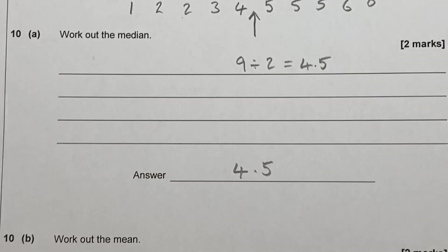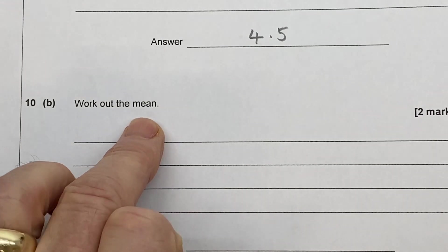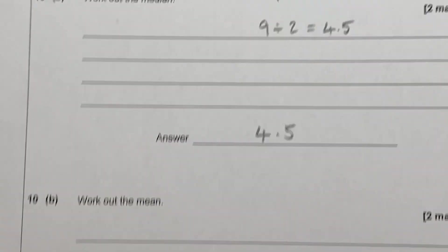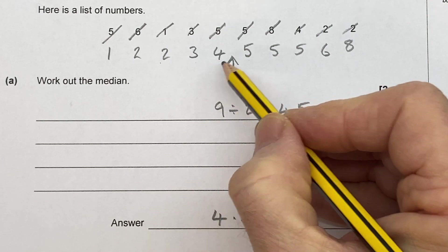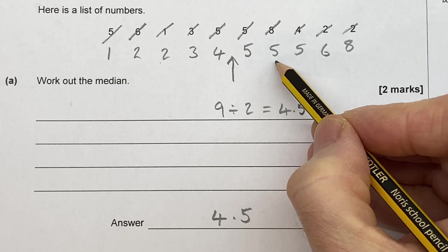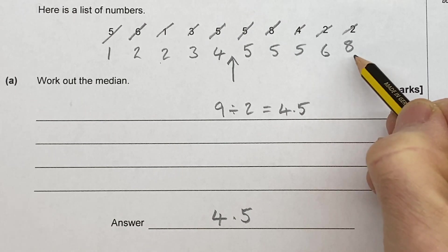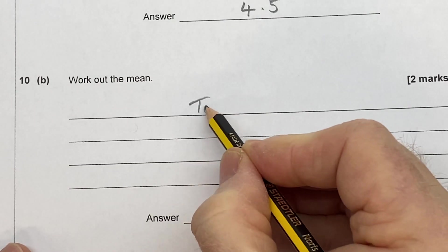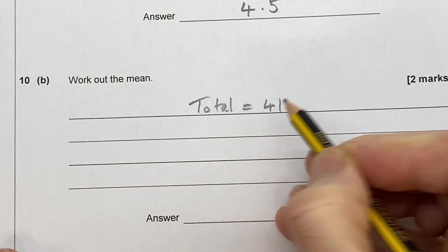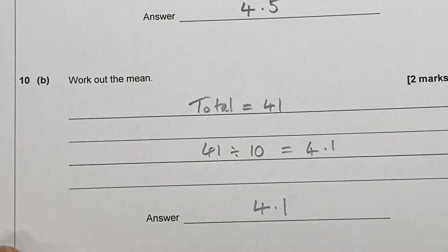Now the next part of the question says, work out the mean. So what we've got to do is to add all those numbers together and then divide by ten. To find the mean, add up all the numbers, divide by ten. So let's look at the numbers again. One add two is three. Four, five. Six, seven, eight. Twelve. Twelve by five is seventeen. Add another five gets us to twenty-two. Add five, twenty-seven. Add six, thirty-three. Add eight, forty-one. Now we're going to divide by ten. So let's write this down. Total equals forty-one. Forty-one divided by ten equals four point one. So there is the mean.